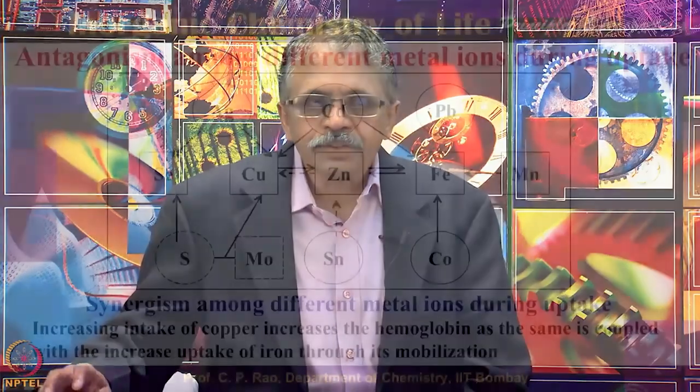I have also explained absorption in the previous lecture. The example I took was iron — absorption by the lumen, from lumen to the intestine, from the intestine to blood. When this kind of absorption happens, it is not just one element being absorbed; several elements are absorbed simultaneously. In such a case there could be a positive kind of interaction or a negative kind of interaction between element X with respect to element Y or Z, assuming that X, Y, and Z are all being absorbed.